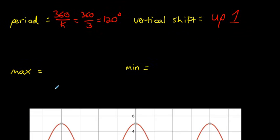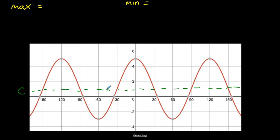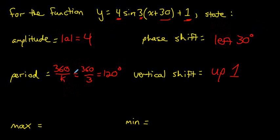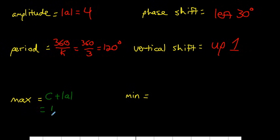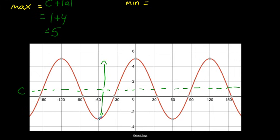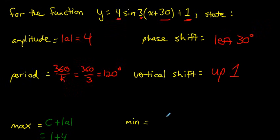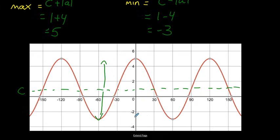We also want to go the other direction: given a graph, write its equation. We need a, k, d, and c. Amplitude a = (max − min) / 2. Max = c + |a| and min = c − |a|. The c value tells you where the midline of the function has moved to, and the amplitude is the distance from the midline to the top.